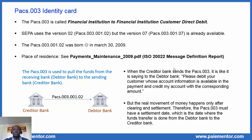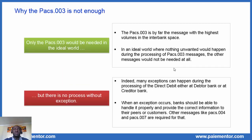Why is the Pax3 not enough? The Pax3 is used to move funds from the debtor to the creditor bank — the main purpose is to debit the debtor account and credit the creditor account, and that happens most of the time. The Pax3 is by far the message with the highest volumes in the interbank space. Why then do we need other messages? In an ideal world, when nothing unwanted would happen during the processing of the Pax3 messages, the other messages would not be needed at all. But we know that is not the right way of thinking.